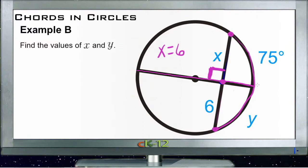So that diameter then bisects that chord, which tells us that 75 and Y are equal halves of this arc right here. So now we know that Y is equal to 75 degrees. Easy enough?